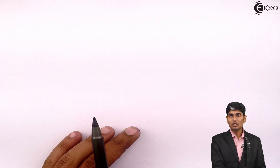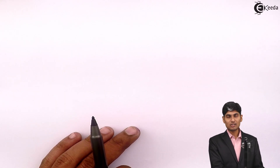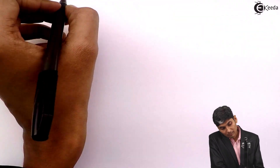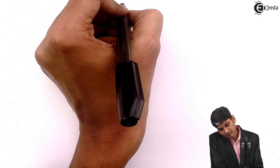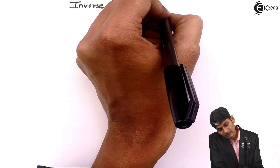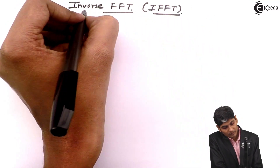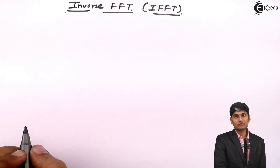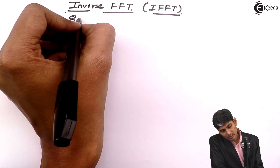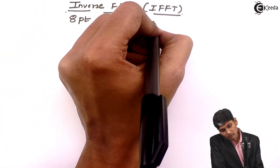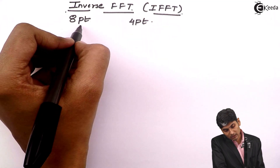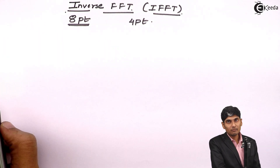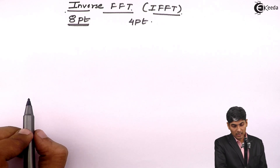Hi friends, let us see how to evaluate inverse Fourier transform using FFT. We will be performing inverse FFT, also called IFFT. There are basically two types of IFFT: one is 8-point and one is 4-point for radix-2 FFTs. Let us see today how to perform an 8-point IFFT and then we will see how to perform a 4-point IFFT.